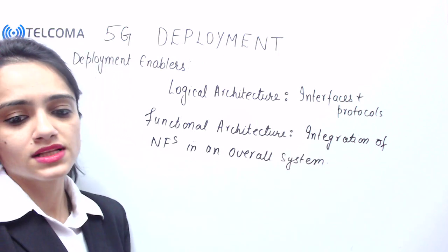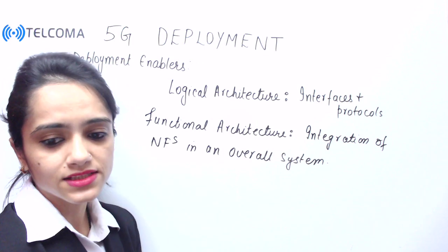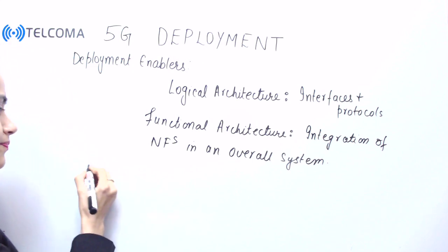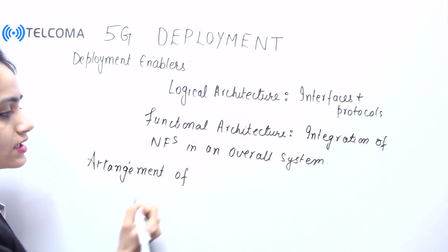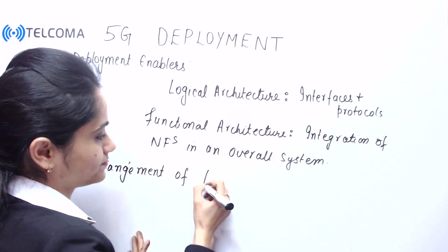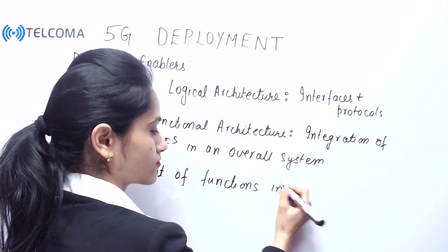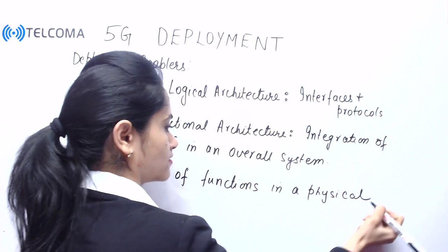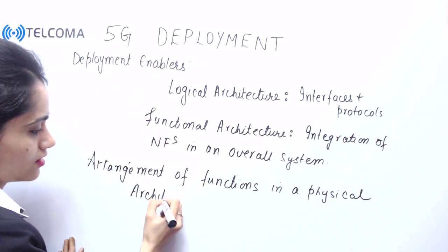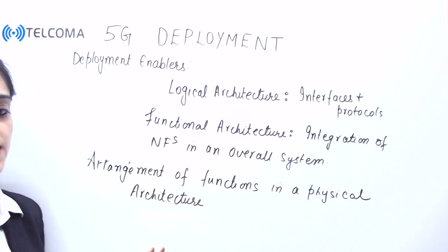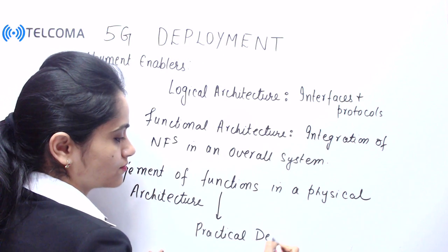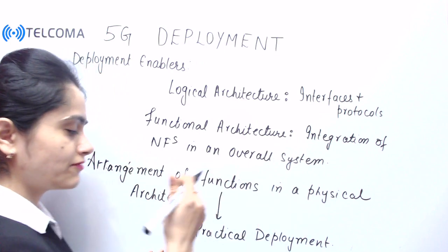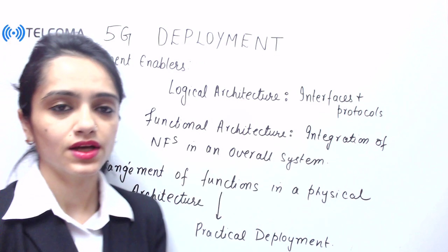The arrangement of functions in a physical architecture is important for practical deployment. All the functions must be arranged in a physical architecture. We have various network functions, and these network functions are mapped on physical nodes.